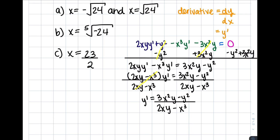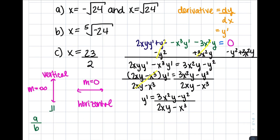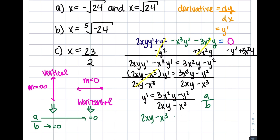Now that we have our derivative, we need to understand what it means when the derivative is vertical or horizontal. A horizontal line gives you a slope of 0, and a vertical line gives you a slope of infinity. In a fraction, to produce infinity you divide by 0 — meaning you set the denominator equal to 0. To produce 0, you set the numerator equal to 0. Since we're looking for when the tangent line is vertical, we'll set the denominator equal to 0.